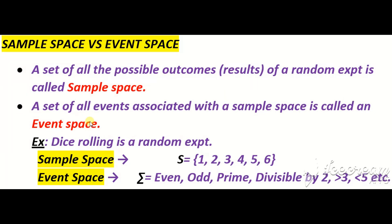یہ تو definitions ہو گئیں۔ اب ہم کچھ examples آپ کے سامنے رکھتے ہیں تاکہ آپ کے ذہن میں جو queries ہیں وہ clear ہو جائیں۔ تو ایک dice rolling experiment لے لیتے ہیں۔ جب ہم dice roll کرتے ہیں تو یہ purely random experiment ہوتا ہے — nobody can expect which number will be on top۔